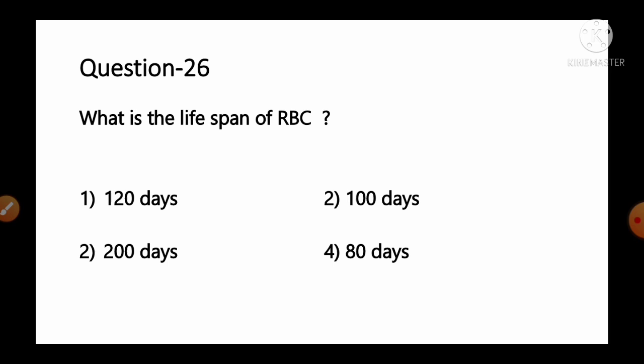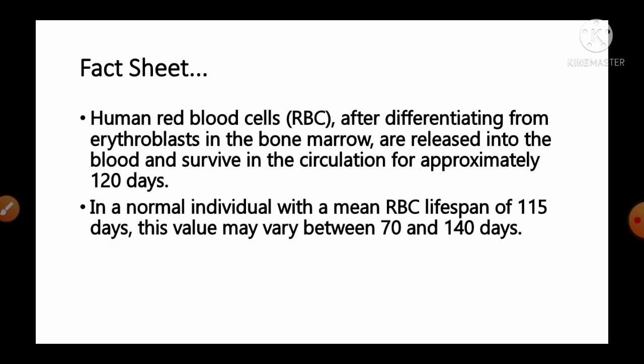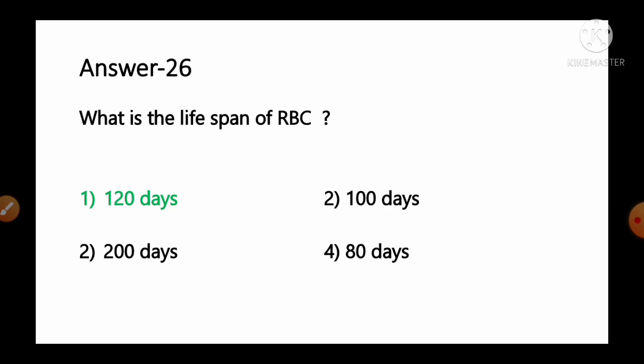Question number 26: What is the lifespan of RBCs? Options: 1) 120 days, 2) 100 days, 3) 200 days, 4) 80 days. Human red blood cells, after differentiating from erythroblasts in bone marrow, survive in circulation for approximately 120 days. In normal individuals the mean RBC lifespan is 115 days, with a range of 70–140 days. So option number 1, 120 days, is the correct answer.